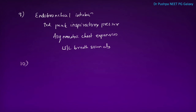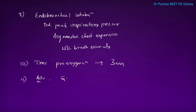The time required for pre-oxygenation before tracheal intubation is 3 minutes. The advantages of irradiation of granulocytes before blood transfusion: it reduces graft versus host reaction, reduces febrile reactions, and decreases the chance of reperfusion injury.